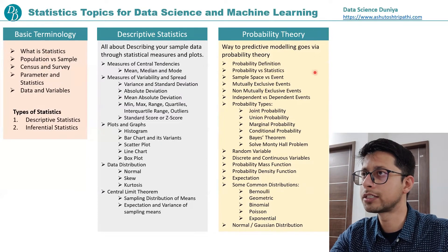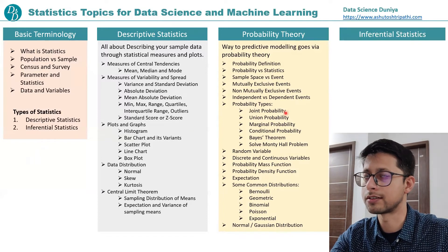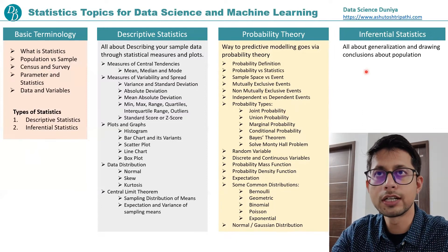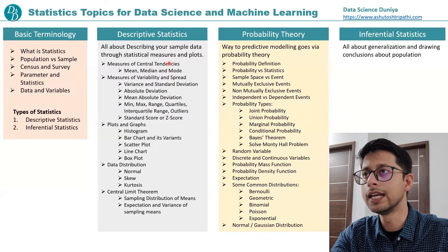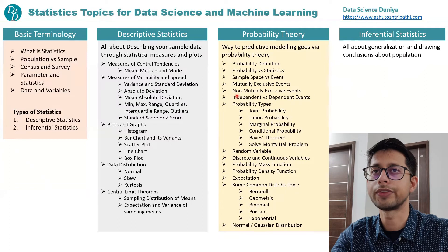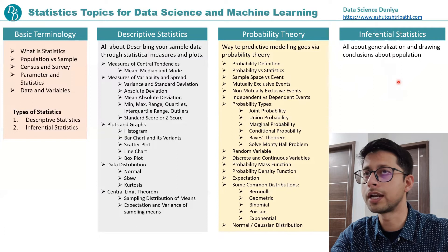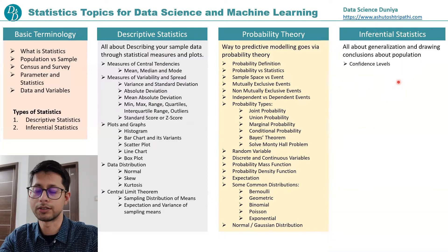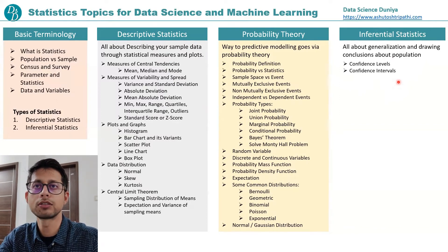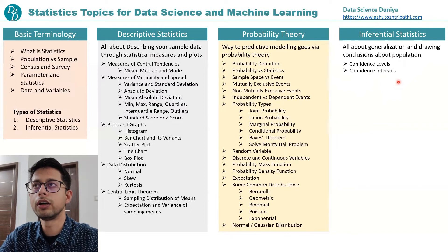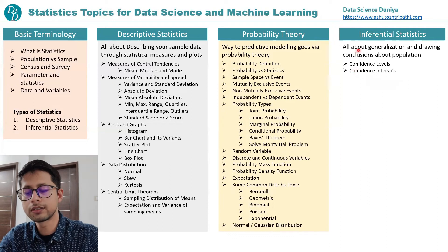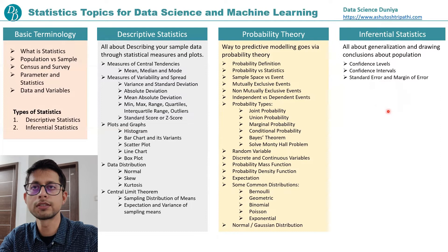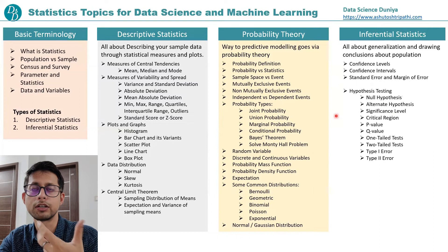After covering basic terminology, descriptive statistics, and probability theory, the next topic is inferential statistics. Inferential statistics is all about generalization — while descriptive statistics describes your sample data, inferential statistics tries to generalize those results about your population. Topics start with confidence levels and confidence intervals, which address how much confidence you have when making a prediction, followed by standard error and margin of error.